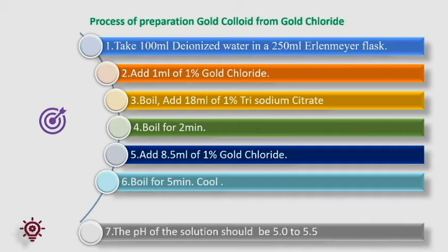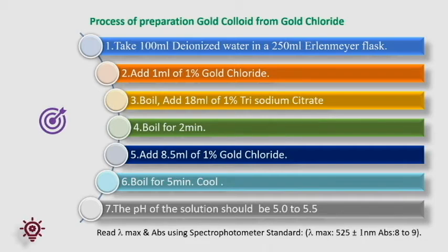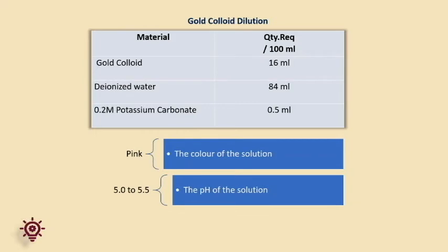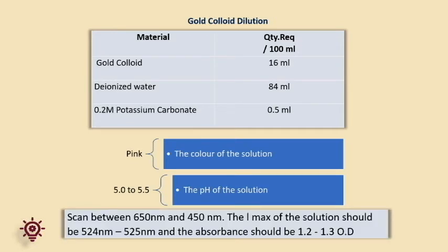The pH of the solution should be 5.0 to 5.5. Scan between 650 nm to 450 nm. The lambda max of the solution should be 525 plus or minus 1 nm, and absorbance should be 8.0 to 9.0 OD. Gold colloid dilution: dilute the concentrated gold colloid of optical density 8.0–9.0 to optical density 1.2–1.3 with deionized water. Check the pH and label the colloidal gold solution. The color of the solution should be pink, pH 5.0 to 5.5, lambda max 525 plus or minus 1 nm, and absorbance 1.2 to 1.3 optical density.